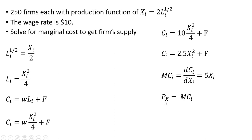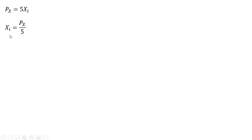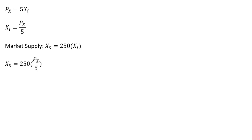In perfect competition, price equals marginal cost. Substituting for MC and replacing it with the price of good X, we solve for X to get the individual firm's supply curve. Now to get market supply, we are told there are 250 firms identical to this one. So 250 times the individual firm's supply gives us market supply: 250 times the price of good X divided by 5, which gives us the market supply equation.